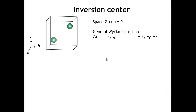Now while thinking about the consequences of different symmetry elements on the structure factor, let's think about the inversion center. Taking the simplest case — space group P1̄ — for every atom at x, y, z, we get another atom at minus x, minus y, minus z. Now this doesn't give us any reflection conditions or missing peaks, but it does have an interesting consequence on the amplitudes and phases of our scattered waves.